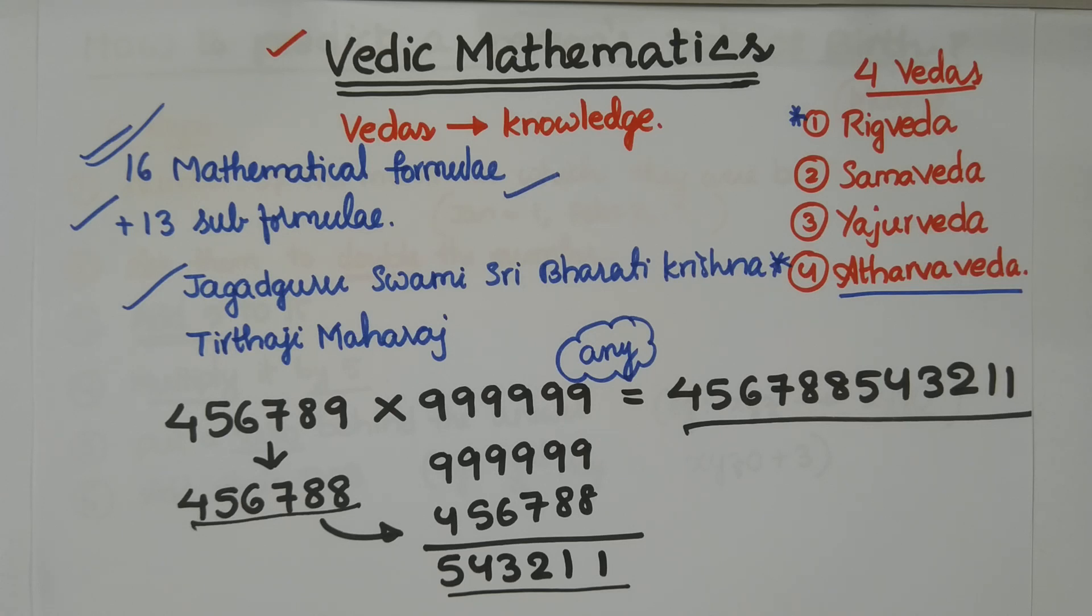Greetings. In our last lecture, we understood the significance and influence of Vedic mathematics in this modern era. Jagat Guru Swami Sri Bharati Krishna Tirthaji Maharaj discovered 16 mathematical formulae and 13 sub-formulae. Using these 16 sutras and 13 upasutras, we can solve any level of mathematical question using Vedic mathematics. You can solve everything in Vedic mathematics, starting from arithmetic to algebra, algebra to geometry, geometry to trigonometry, trigonometry to conics, conics to calculus with God's speed.